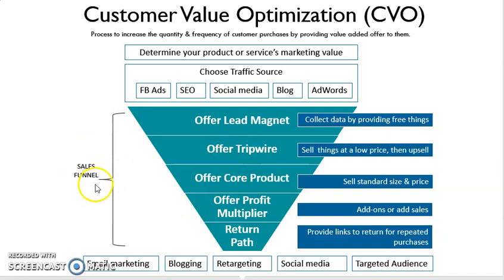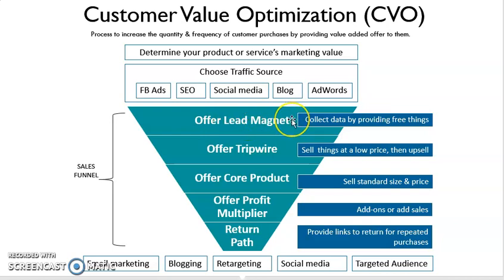Using a sales funnel, first we target a wide amount of customers in the segment by offering a lead magnet. A lead magnet is something to attract them — to attract customers to know our product. We are not trying to sell them at the moment, but more to attract them to know our product. So we try to collect data by providing free things, such as a free sample, in exchange for their personal data.